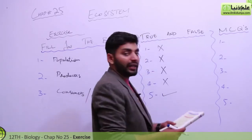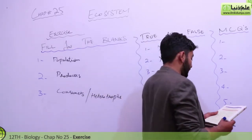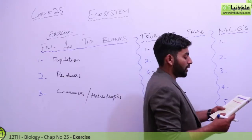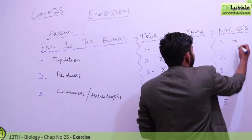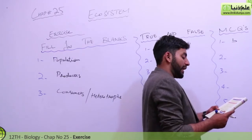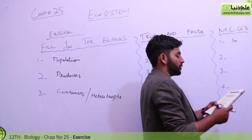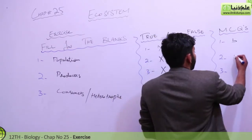Then we have MCQs, multiple choice questions. First question: the study of the relationship of organisms to their environment is known as biology, physiology, mycology, or ecology. That is ecology, B. Similar group of individuals who can interbreed and produce organisms of their own kind forms population, species, community or succession. Species, B.